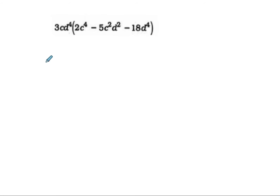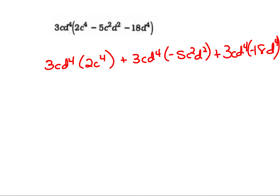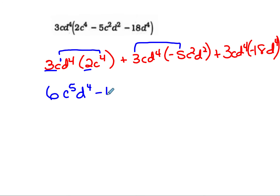Try this one. We have 3cd to the 4th times the quantity 2c to the 4th, plus 3cd to the 4th times negative 5c squared d squared, plus 3cd to the 4th times negative 18d to the 4th. So 3 times 2 is 6. That's c to the 1st, so 1 plus 4 is c to the 5th, and d to the 4th stays since there's no d in 2c to the 4th — so 6c to the 5th d to the 4th. Then 3 times negative 5 is negative 15, c to the 1st plus 2nd is c to the 3rd, d to the 4th times d squared is d to the 6th.